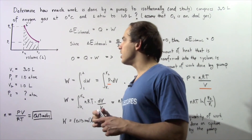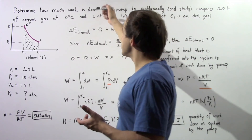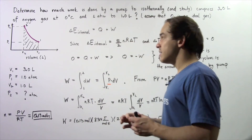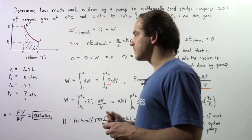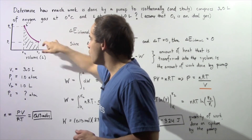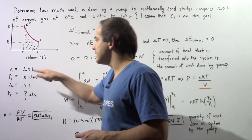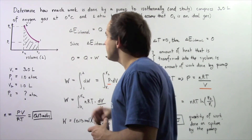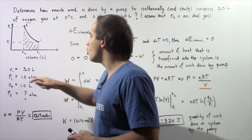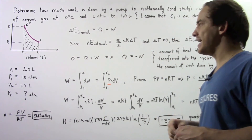Let's look at the graph that depicts our compression. Our gas is compressed by the pump from position 1 to position 2 isothermically. At position 1, the volume V1 is equal to 3 liters and the pressure P1 is 1 atm. Our ideal gas is compressed to position 2 where the volume V2 is 1 liter, and the pressure is higher, though we don't know what that pressure is.